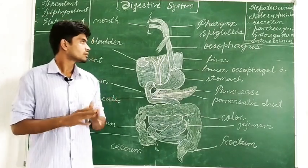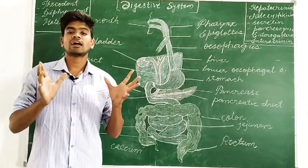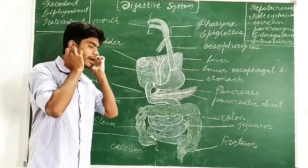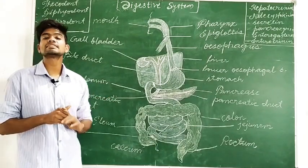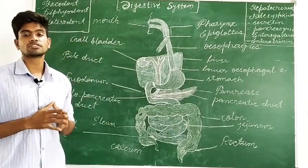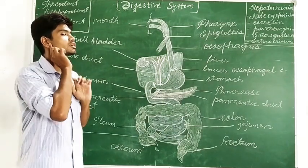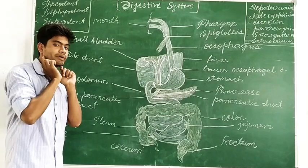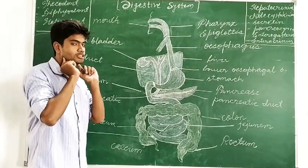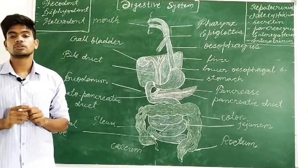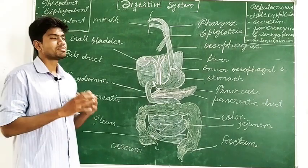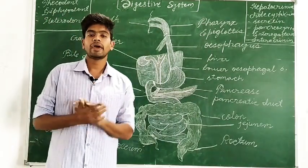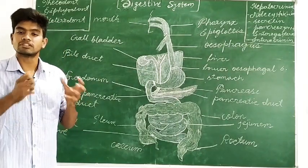The parotid glands are the largest salivary glands in humans, located on the sides of the face just below and in front of the ears — also called Stensen's duct. The submaxillary or submandibular glands are located at the angles of the lower jaw and are also called Wharton's duct. The sublingual gland, as the name suggests, is located under the tongue and is also called the ducts of Rivinus.